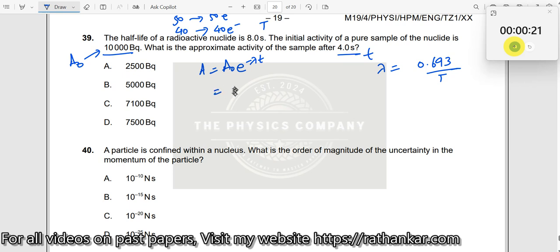So this should now be equal to A0: 10,000 e to the power of minus lambda, 0.693 divided by capital T. Capital T is 8 seconds multiplied by small t is 4. So this should now be equal to 10 power 4 e to the power of minus 0.693 divided by 2.